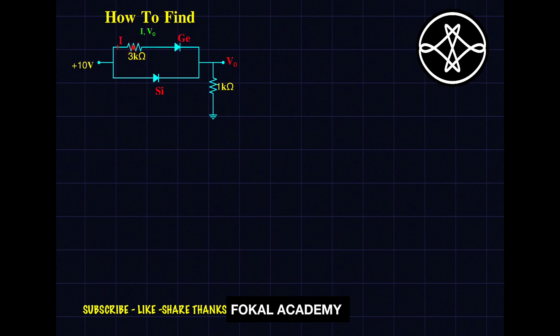Two branches are there. In one branch, there is a Germanium diode in series with a 3kΩ resistor. In another branch, there is a silicon diode. Both are in parallel to each other and we need to find current I, which passes through this branch, and the voltage V0 across the 1kΩ resistor.